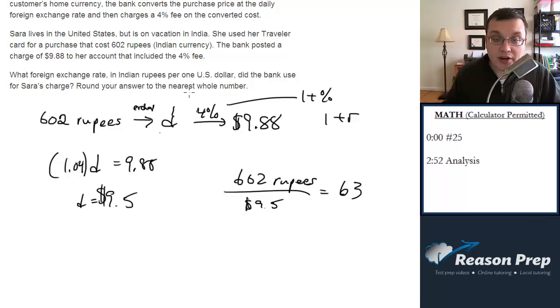So 602 divided by 9.5. So that's 63, we're going to round it to the nearest rupees, so it's 63 rupees per dollar, and that's your answer.